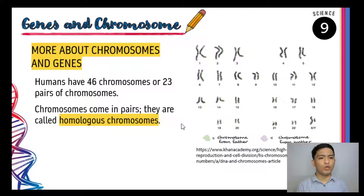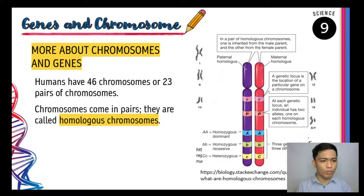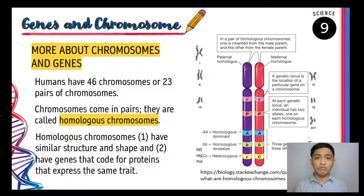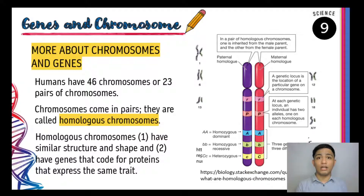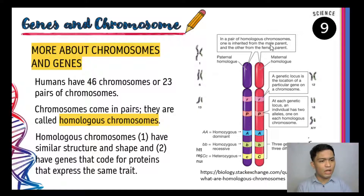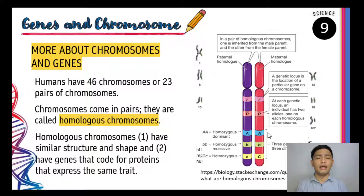Homologous chromosomes are paired because, first, they have similar structure and shape. More importantly, they have the same genes that code for proteins that express the same trait. They share the same type of gene and the same arrangement. For example, one chromosome might have the gene controlling the protein needed for hair color, height, or blood type — and its homologous partner chromosome will have the same genes in the same arrangement.